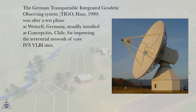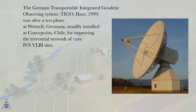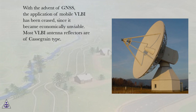The German transportable integrated geodetic observing system, TYGO (Hays, 1999), was after a test phase at Wetzel, Germany, steadily installed at Concepcion, Chile, for improving the terrestrial network of core IVS VLBI sites. With the advent of GNSS, the application of mobile VLBI has been ceased since it became economically unviable.